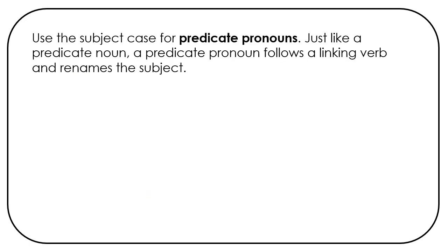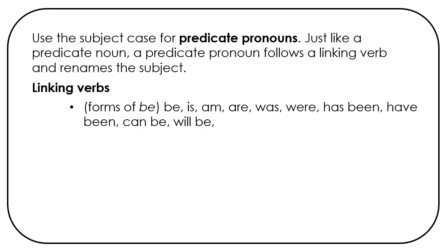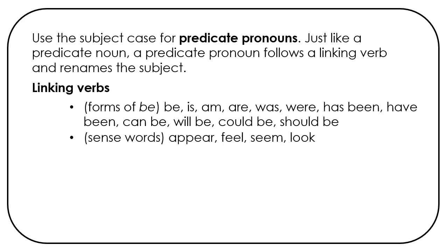Use the subject case for predicate pronouns. Just like a predicate noun, a predicate pronoun follows a linking verb and renames the subject. Here are some linking verbs. Forms of be: be, is, am, are, was, were, has been, have been, can be, will be, could be, should be. Sense words: appear, feel, seem, look, sound, taste.